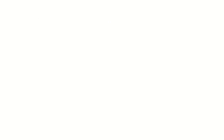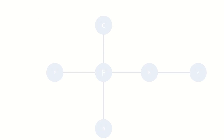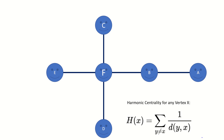How does harmonic centrality differ from the more common measures of centrality, like degree centrality or closeness centrality? Well, harmonic centrality for a vertex x is defined as the sum of the reciprocal of the distances between that vertex x and every other vertex in its graph, not including itself.